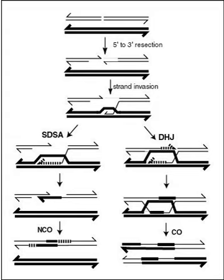When two or more viruses, each containing lethal genomic damages, infect the same host cell, the virus genomes can often pair with each other and undergo HRR to produce viable progeny. This process, referred to as multiplicity reactivation, has been studied in Lambda and T4 bacteriophages, as well as in several pathogenic viruses. In the case of pathogenic viruses, multiplicity reactivation may be an adaptive benefit to the virus, since it allows the repair of DNA damages caused by exposure to the oxidizing environment produced during host infection.